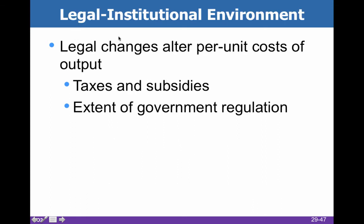The legal and institutional environment is another thing that impacts supply — basically taxes and subsidies. If taxes go down, supply goes up; if taxes go up, supply goes down. The extent of government regulation also matters. If we decrease regulation, businesses will be able to be more effective and supply more stuff, which is generally true, though sometimes removing regulation leads to unanticipated problems. Oftentimes deregulation works out well.